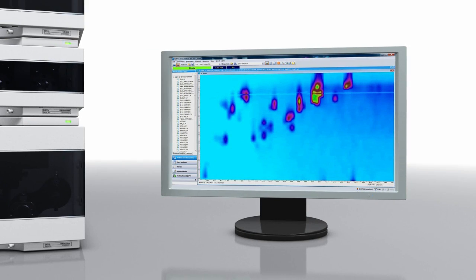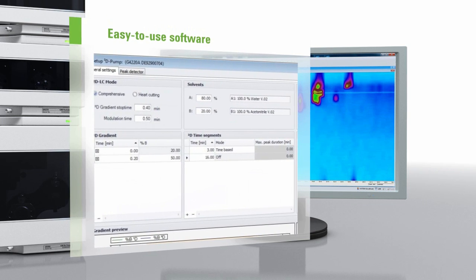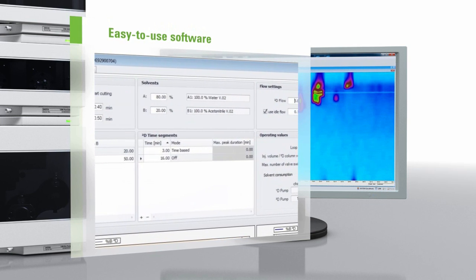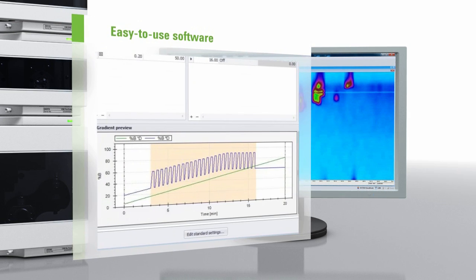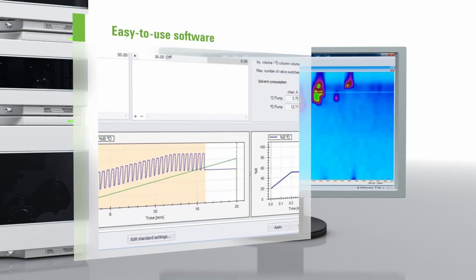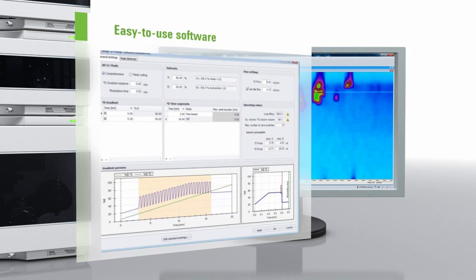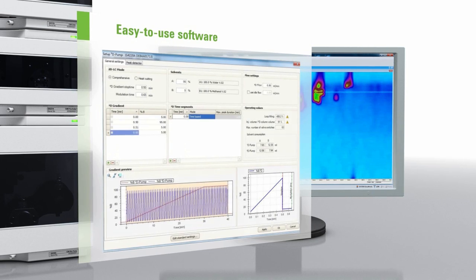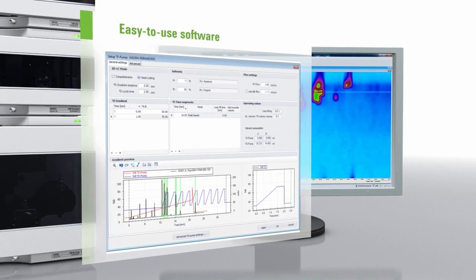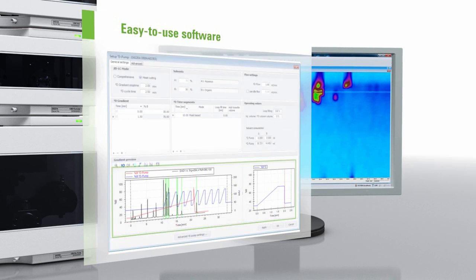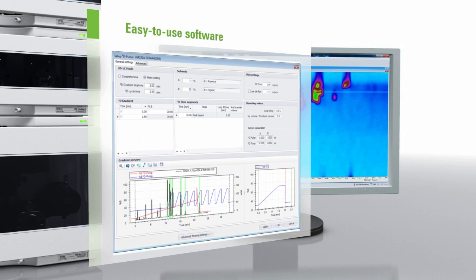Another key factor is the easy-to-use software. A quick start guide takes you intuitively through system configuration and method setup. All required parameters are available in a single screen, supporting you with automatic calculation of critical parameters and thereby enabling you to set up the most advanced gradient combinations within seconds. For multiple heart cutting 2D LC, a preview function is available. Load a reference signal to identify at a glance which peaks you want to heart cut.